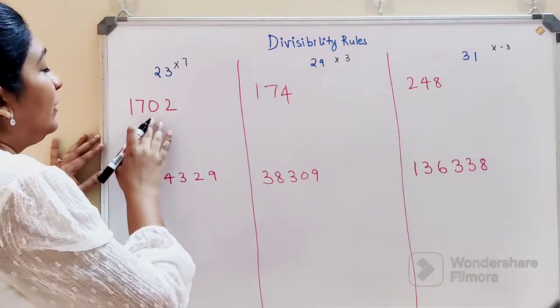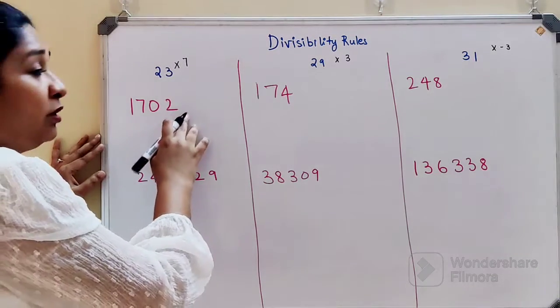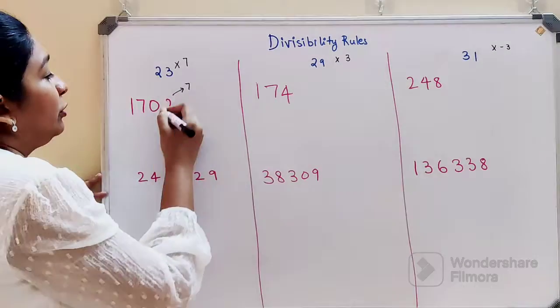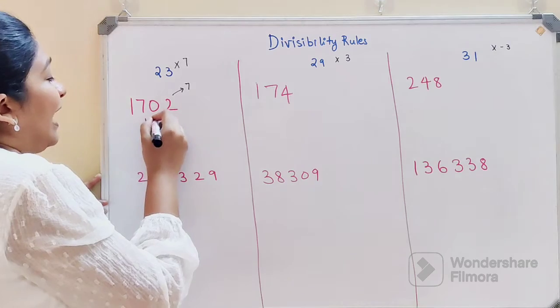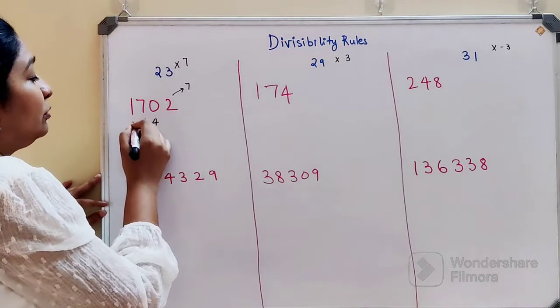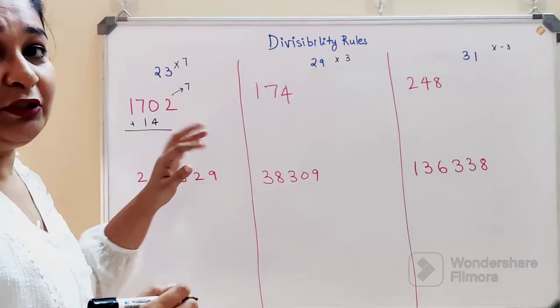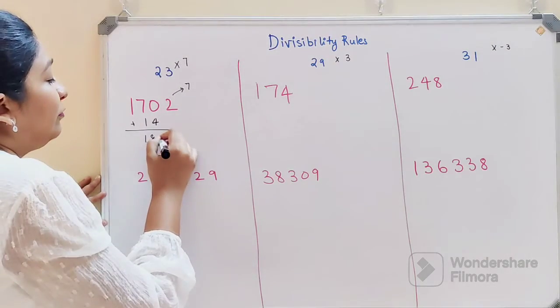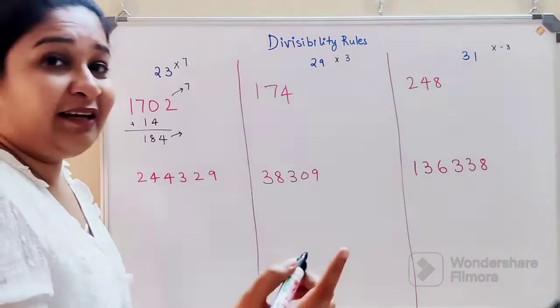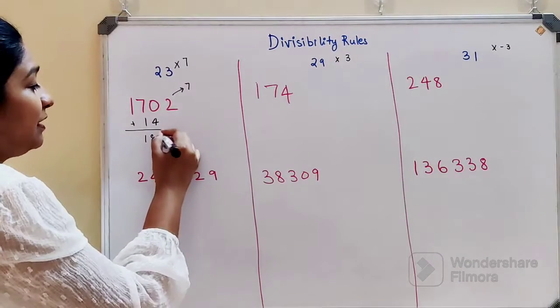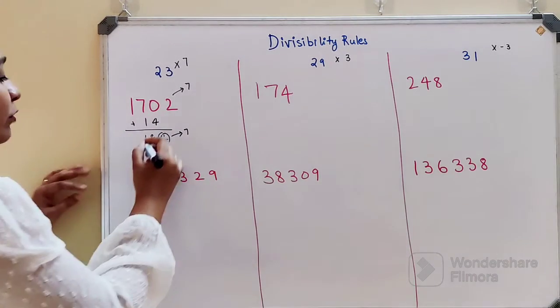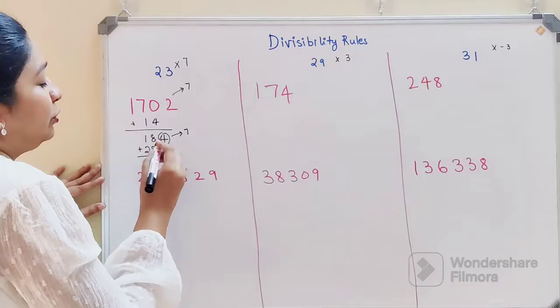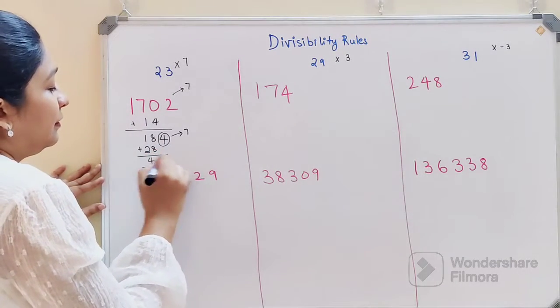2 times 7 gets you 14. You add 14 to the rest of the numbers, which is 170. So 170 plus 14 gets you 184. Now again multiply 7 by this last digit 4, so you have 28. When you add this, you get 46.